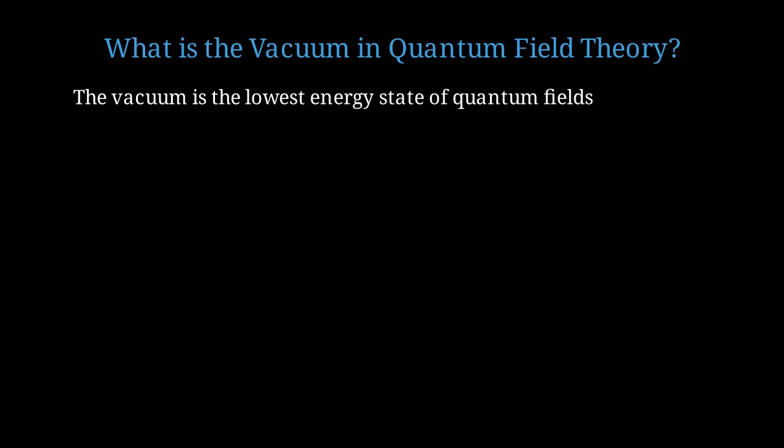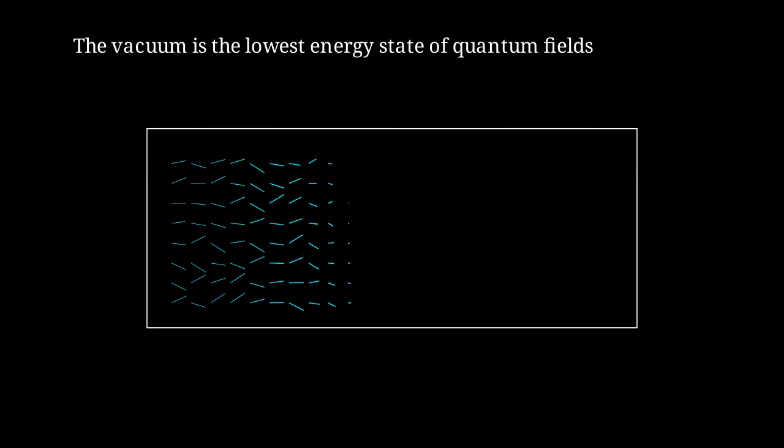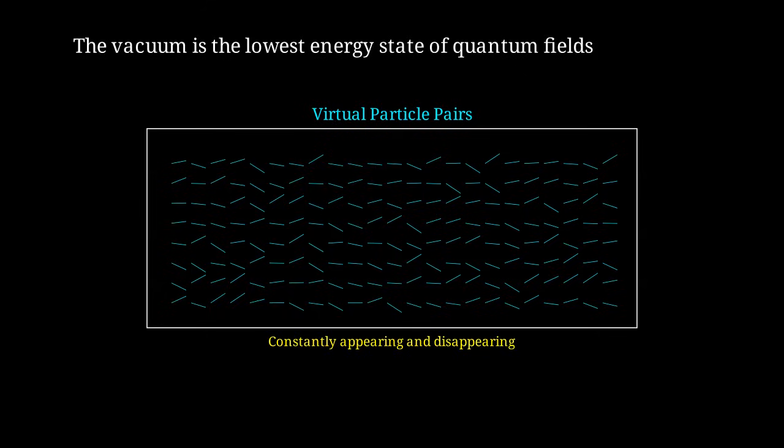The vacuum is defined as the lowest energy state of all quantum fields. But even in this lowest energy state, quantum fields are constantly fluctuating. These fluctuations manifest as virtual particle-antiparticle pairs that spontaneously appear and annihilate in extremely short timescales. These are called vacuum fluctuations, or zero-point energy fluctuations.